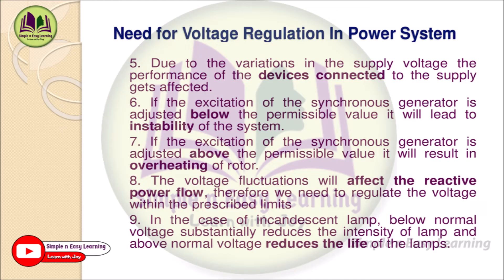Eighth, voltage fluctuations affect reactive power flow, so voltage must be regulated within prescribed limits. Voltage (V) and reactive power (Q) are related — if more reactive (inductive) loads such as induction motors, iron boxes, or water heaters are used, they draw more reactive power from the supply, causing voltage to drop. This voltage dip can be experienced when switching on inductive loads. Ninth, for incandescent lamps, below-normal voltage substantially reduces lamp intensity, while above-normal voltage reduces lamp lifetime.